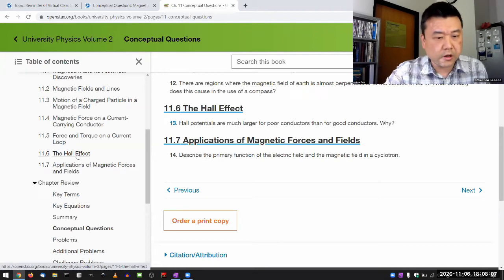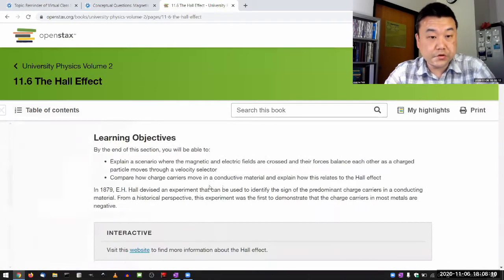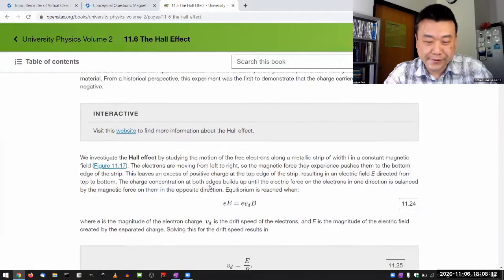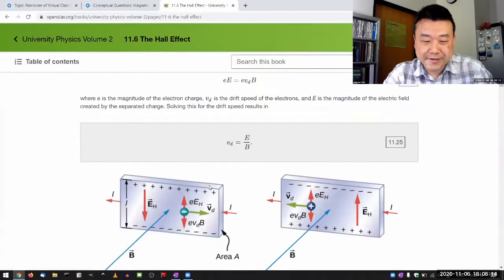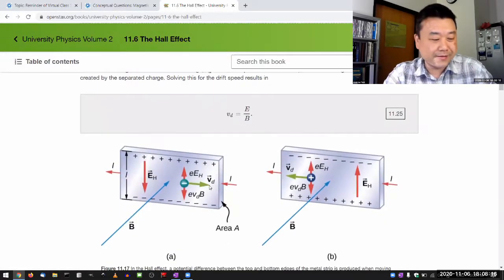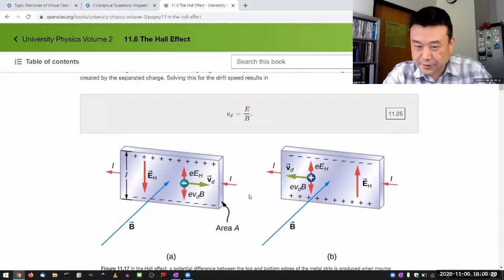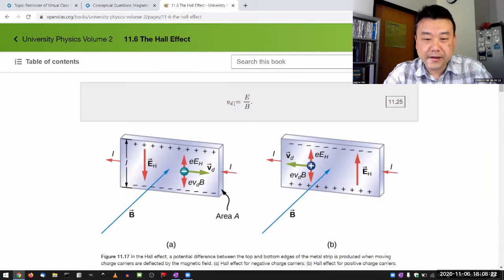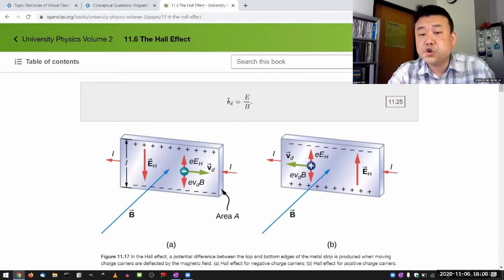So first, the Hall effect. So you should look at it, read through it, kind of understand where the effect comes from. It comes from the magnetic force on the charged particle as they move across the conductor. And this is the criteria under which the particle is no longer deflected. This is the equilibrium condition.